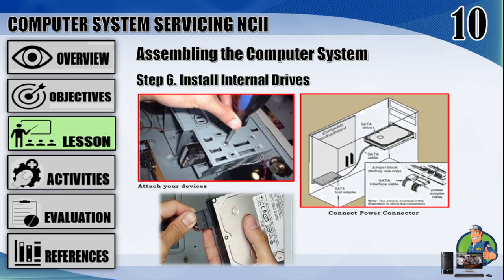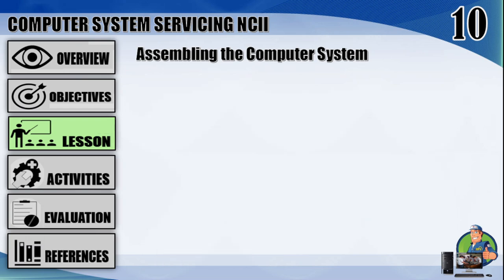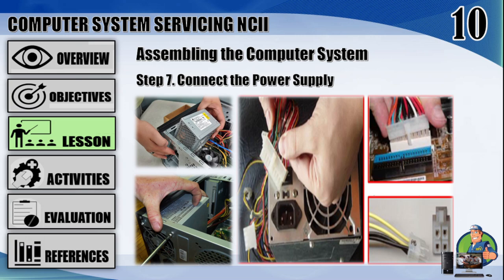Step 6: install internal drives — install the optical disk drive at the top front end of the cabinet and screw it. Install the hard disk drive and floppy disk drive below the optical disk drive and screw them. Make sure once screwed there is no vibration in either the optical disk drive, hard disk, or floppy disk drives. Step 7: connect the power supply — line up the power supply at the top back end of the cabinet and screw it. Plug the power connectors from your power supply into the matching port on your motherboard. Refer to your motherboard's manual for the exact locations.